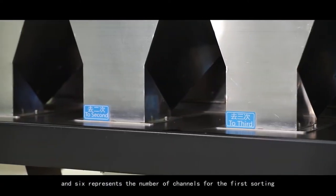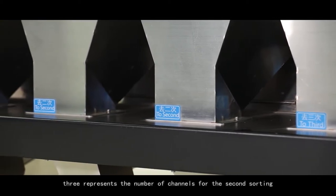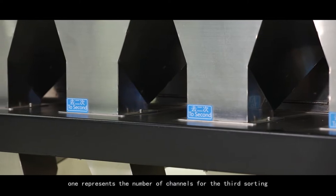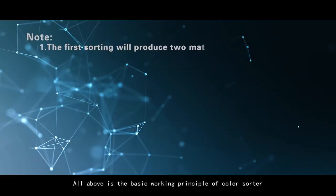And 6 represents the number of channels for the first sorting. Three represents the number of channels for the second sorting. One represents the number of channels for the third sorting. All above is the basic working principle of color sorter.